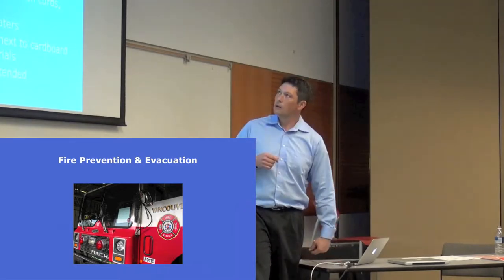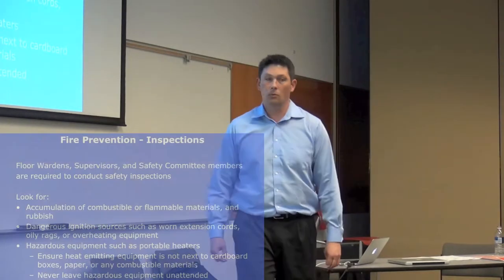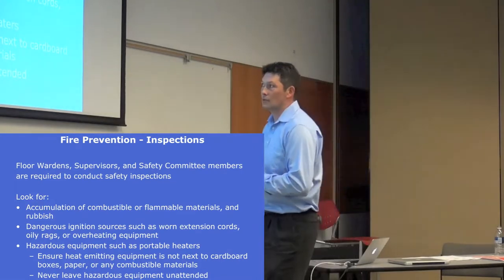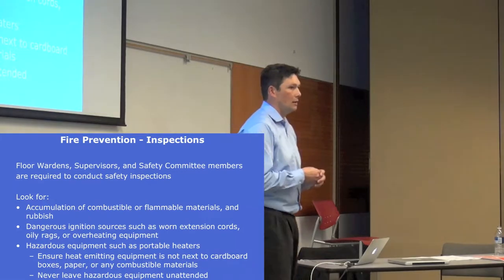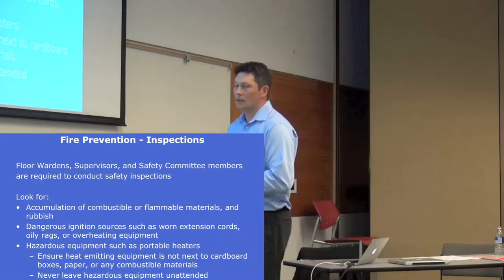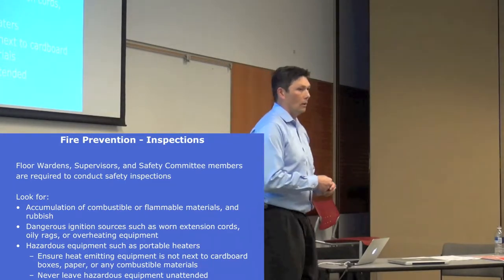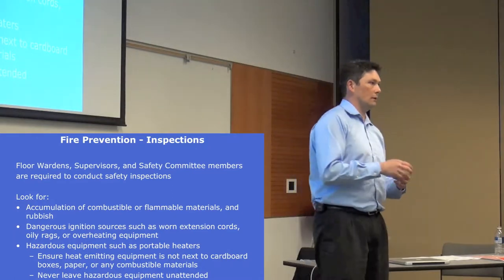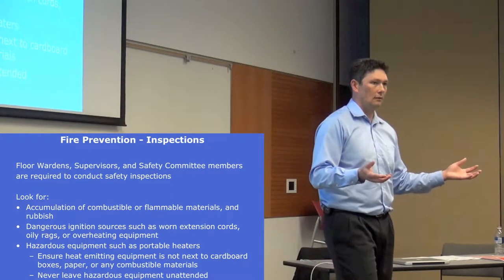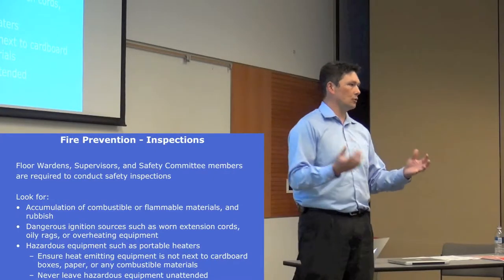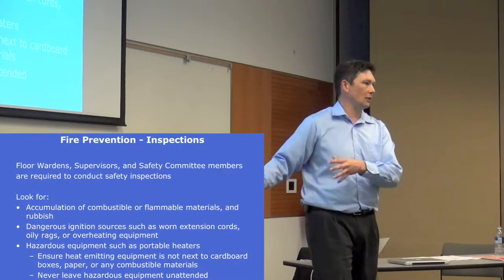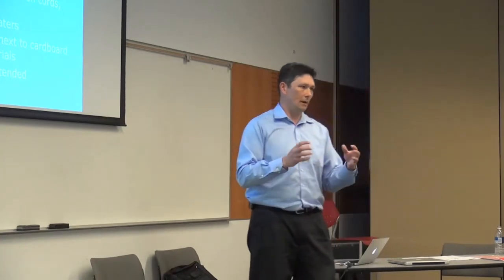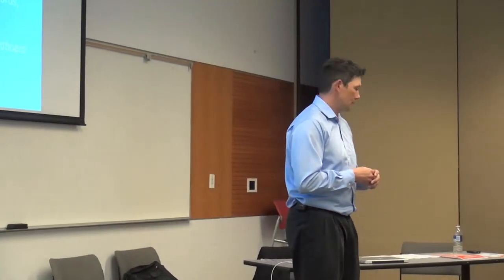Going back to inspections: look for combustibles accumulating and ignition sources. In your area you have a lot of electronics — take a look at worn extension cords and things like that. One of the big places to look is places you might not think of. Your lab is probably up to code, but then you go into your lunch room and somebody's brought in their old toaster that's in disrepair. It always seems that in lunch rooms and office spaces, people bring in their own stuff because it's not good enough for their house but good enough for the office — that's not the case. Make sure you buy brand new, properly approved items.